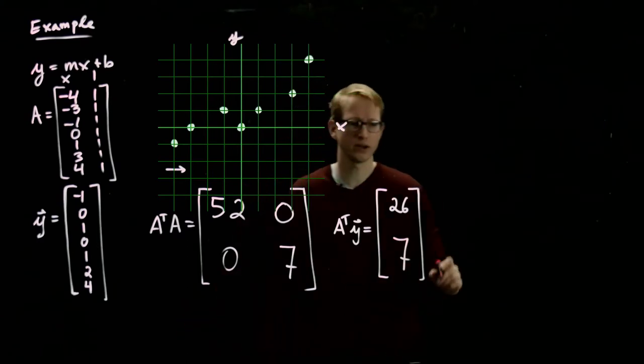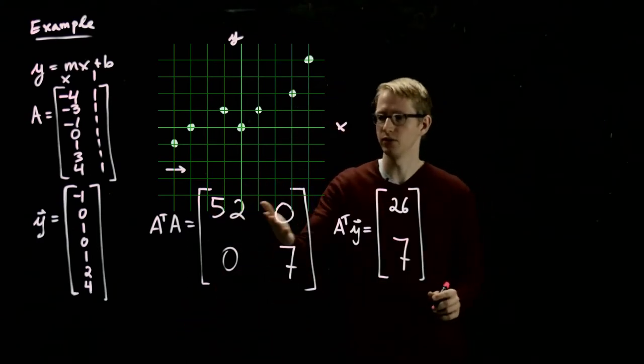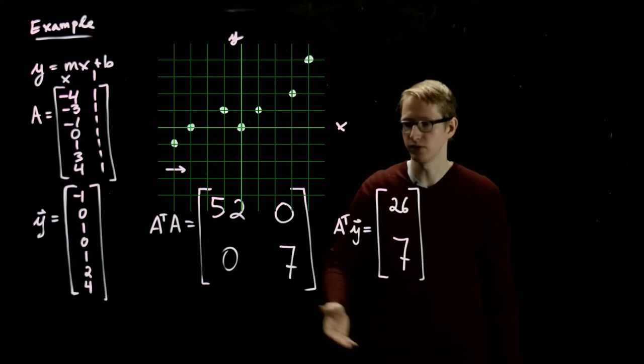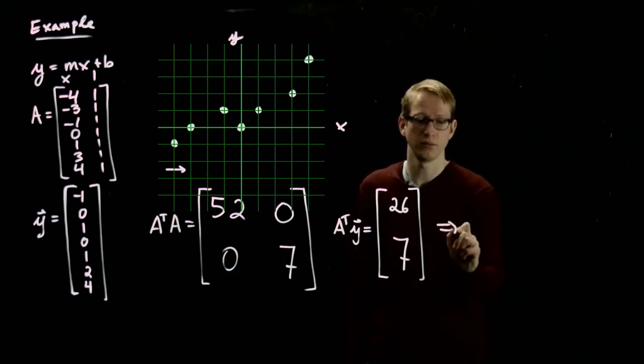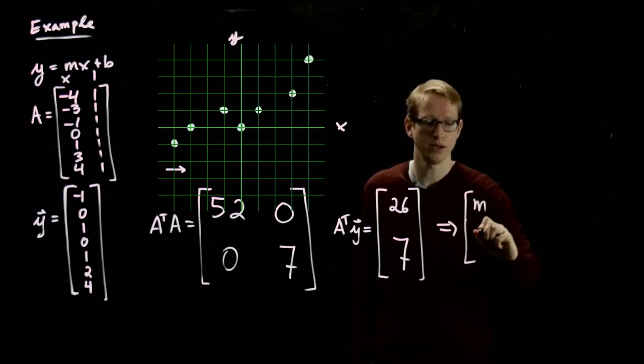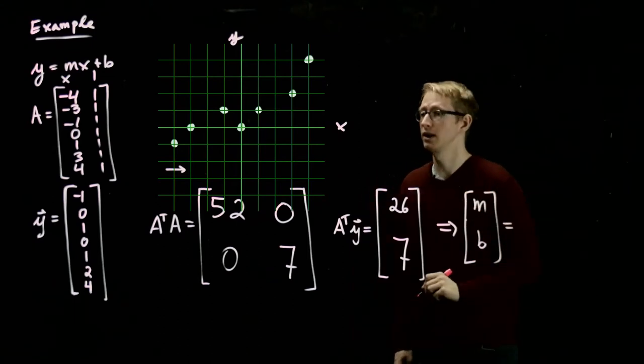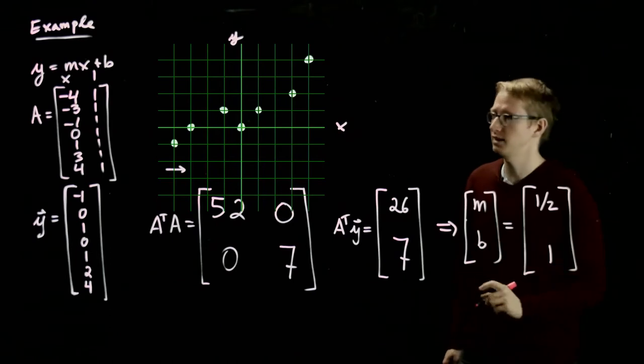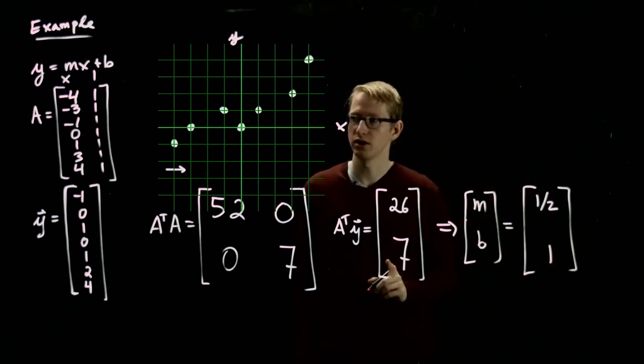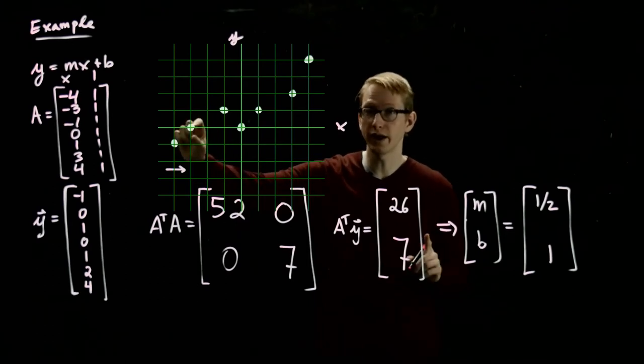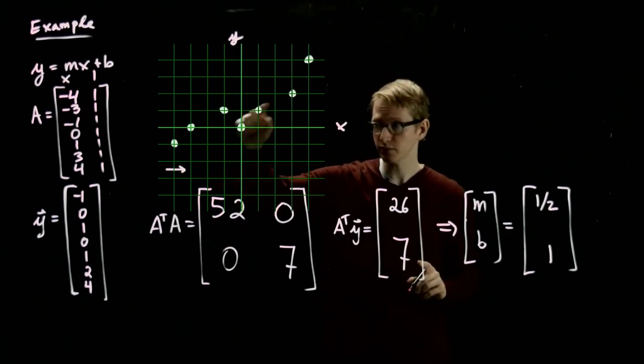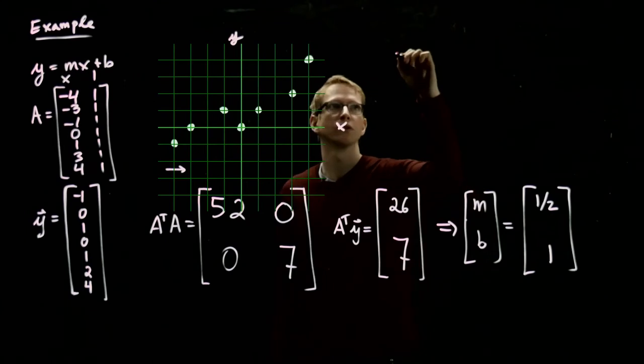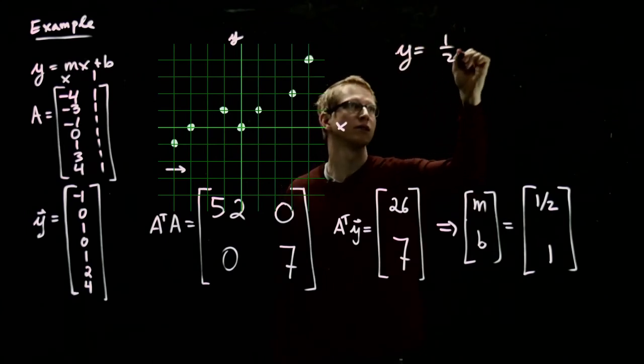Now solving this system is pretty straightforward, right? This is 52, 0, 0, 7. On one side, 26, 7. We just have to divide everything by 50, the first row by 52, the second row by 7, and we immediately arrive at the vector MB. Our vector of unknowns is 1 half and 1. So this tells us that the best fit approximation that minimizes the vertical distance squared between that line and all of these data points has slope 1 half and y-intercept 1.